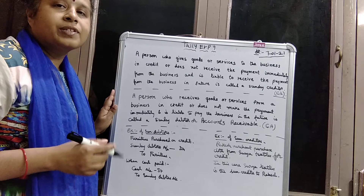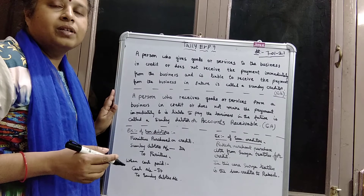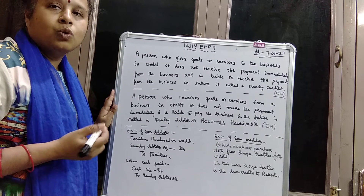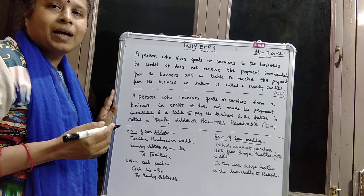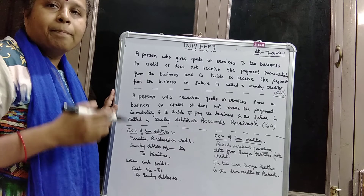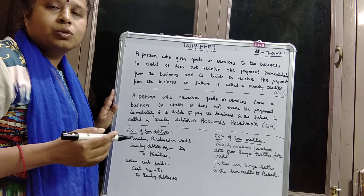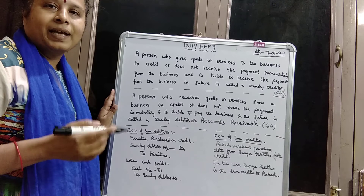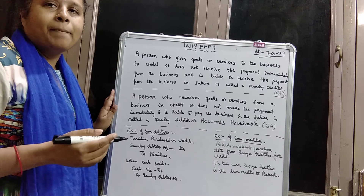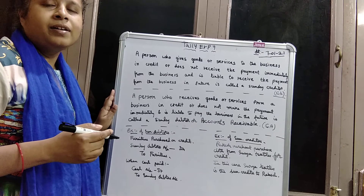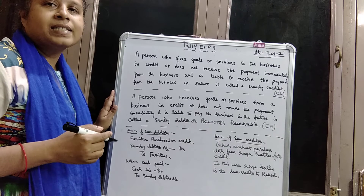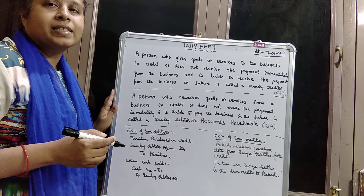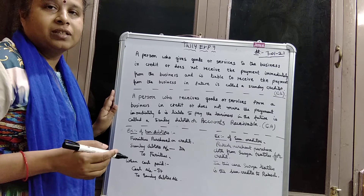Sundry debtors are also called accounts receivable. They receive the goods but do not pay the cash to the suppliers immediately; they pay later. Sundry debtors are written under current assets, that is the right side of the balance sheet.